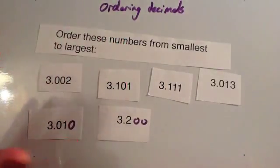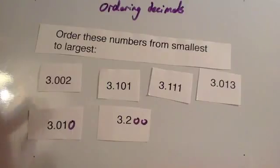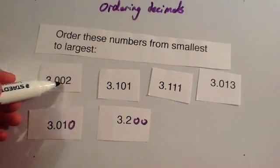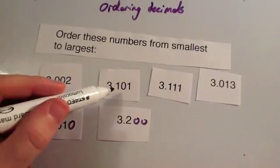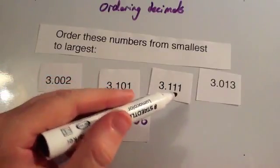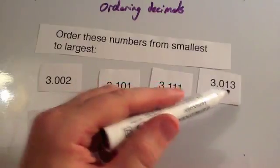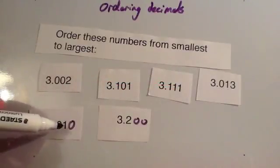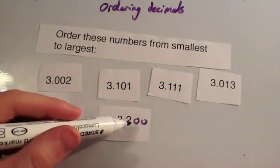Now we can arrange them in order, much more easily than we could have done at the beginning. Here you can see this one is 3.002, 3.101, 3.111, 3.013, 3.010, and 3.200.